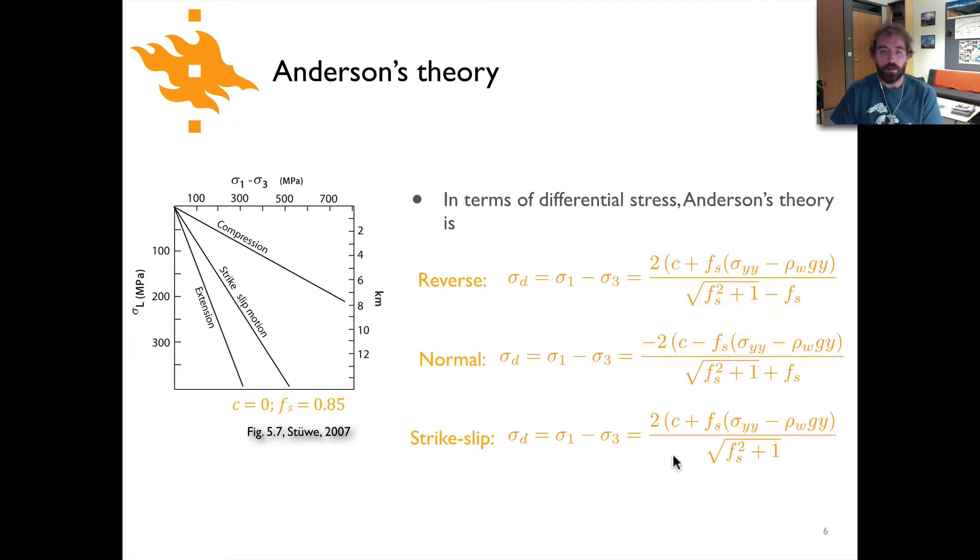And then the relationship for strike-slip is, again, it's a bit like what we see above. At least the top part is like that for a reverse fault. And then here in the bottom we have the square root of fs squared plus 1, but no minus fs.